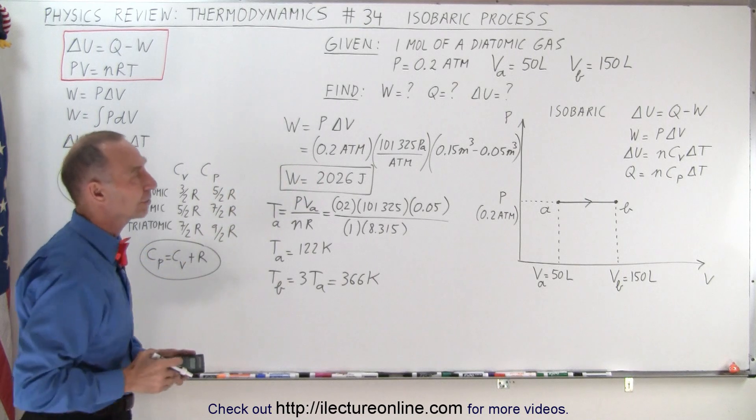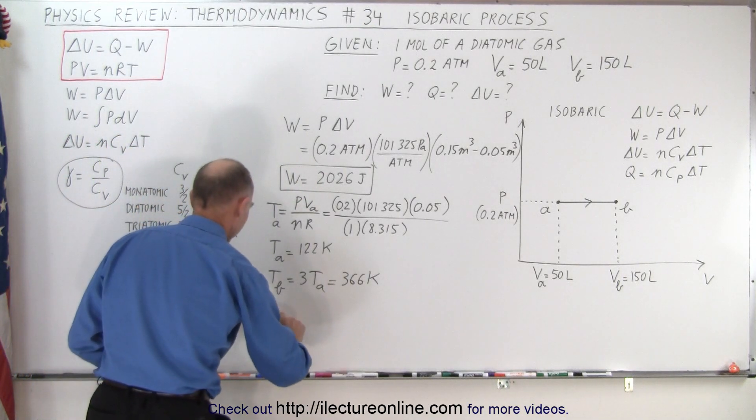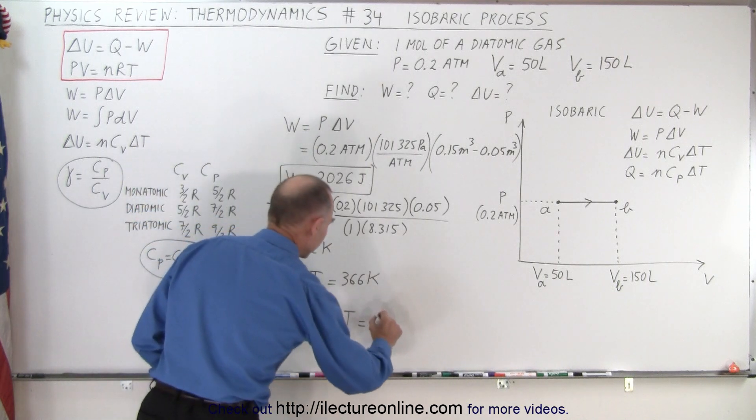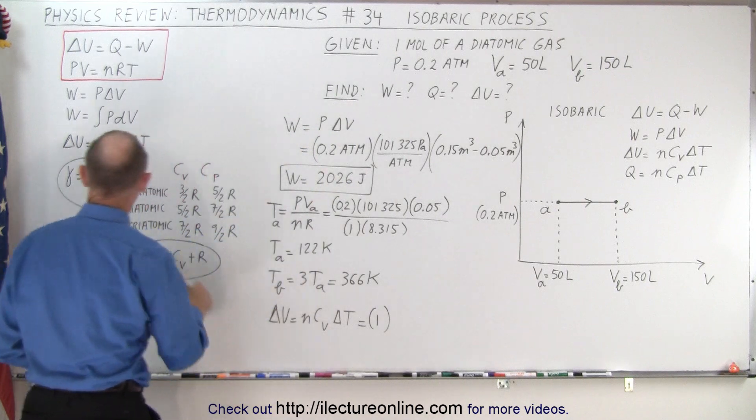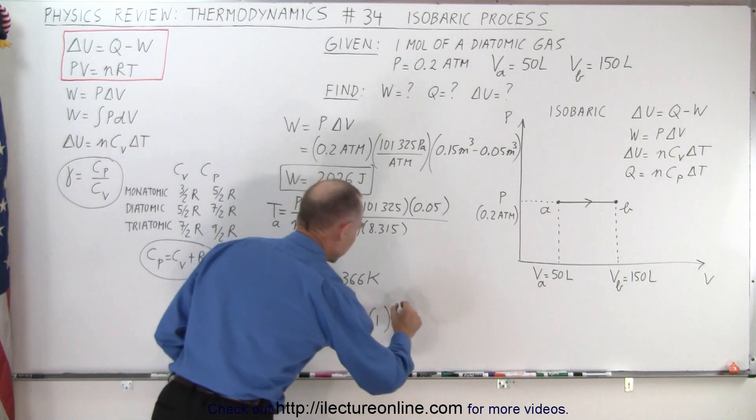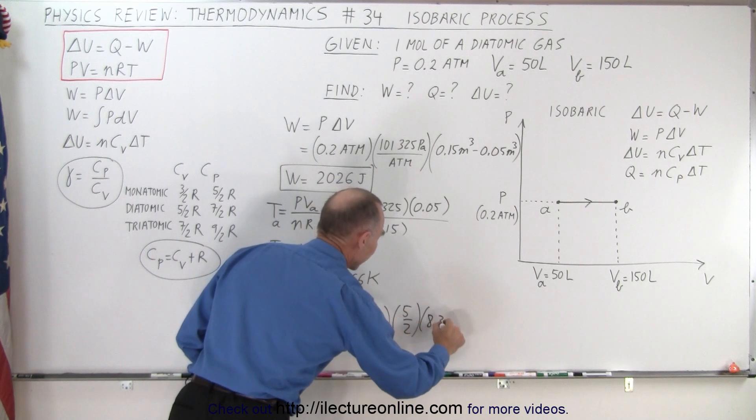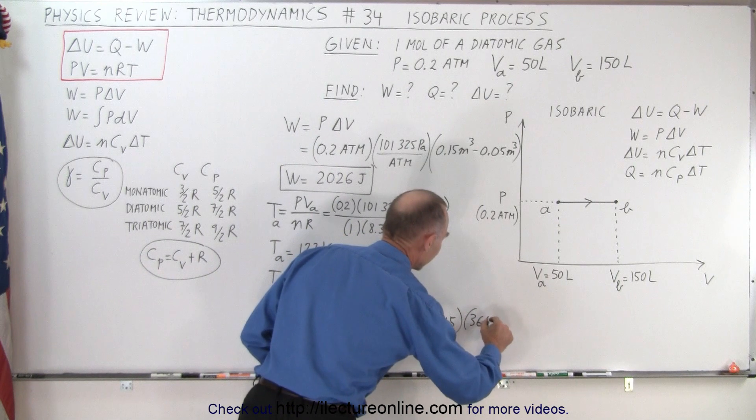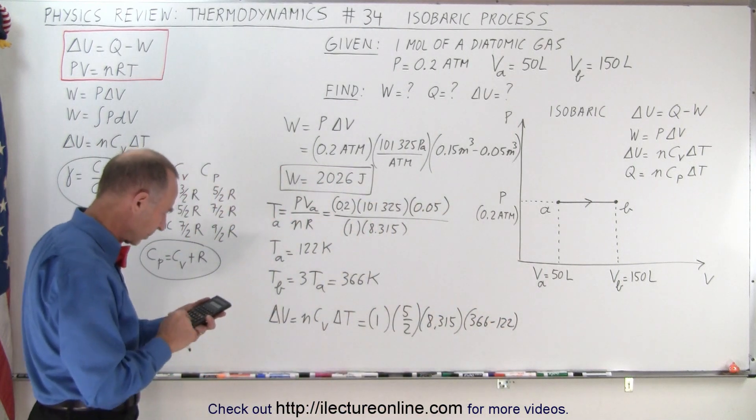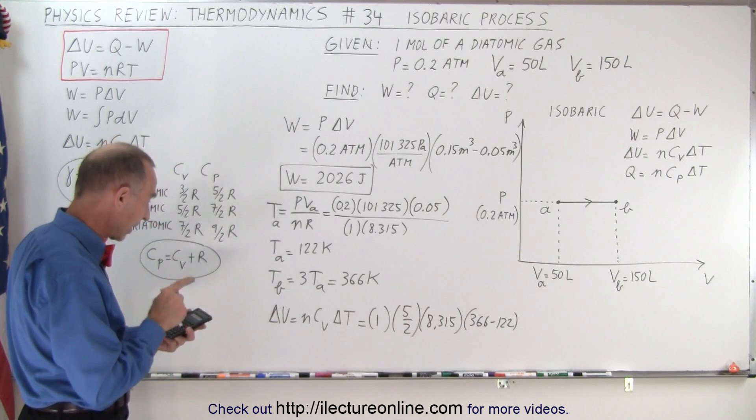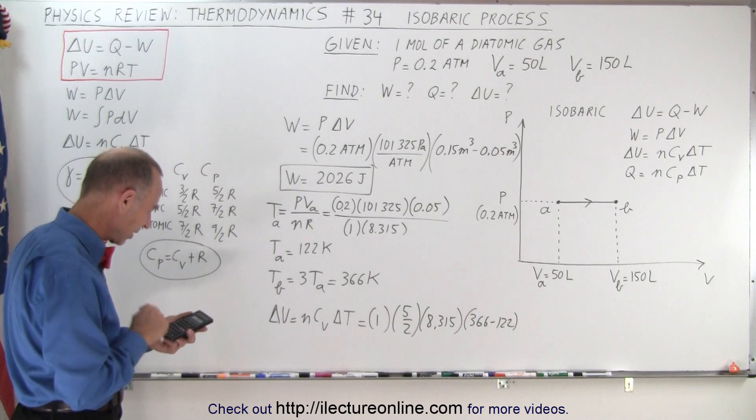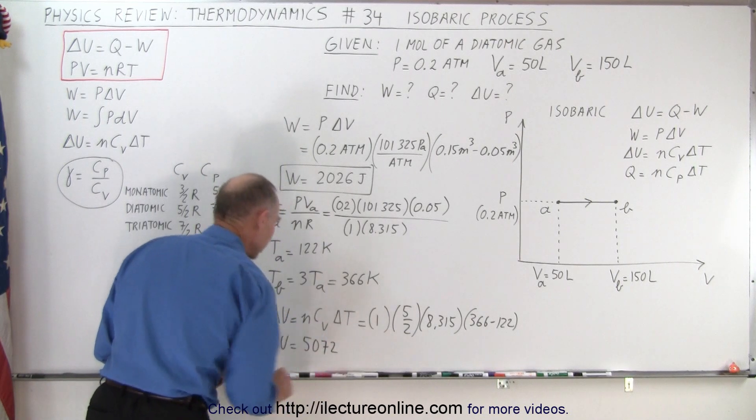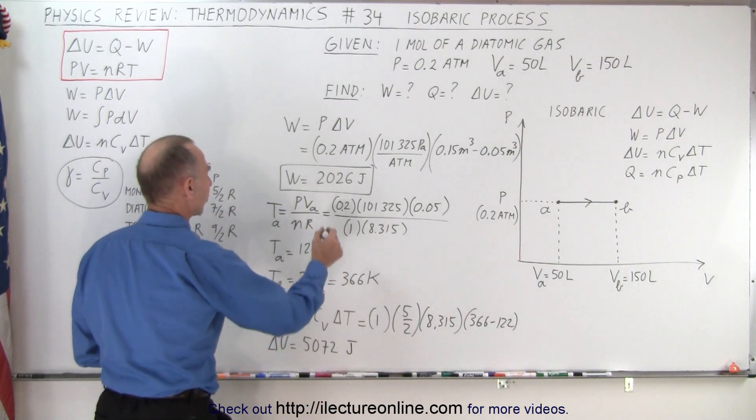Now that we know the two temperatures, we can easily calculate delta U and Q. First, delta U. Delta U is equal to n C_v delta T. N is 1. C_v, we're given that it's a mole of diatomic gas, so we go to diatomic gas. C_v is 5 over 2 R. So 5 over 2 and R is 8.315. Change in temperature from 366 to 122, so that would be 366 minus 122. 366 minus 122 is 244 times 2.5 times 8.315 equals 5072. So delta U is equal to 5072 joules. So we have work done and we have delta U.